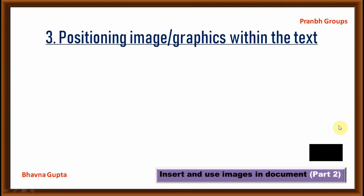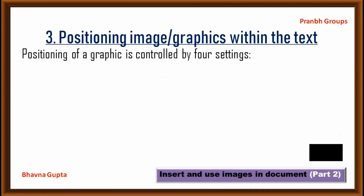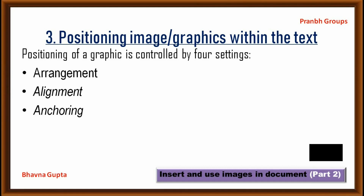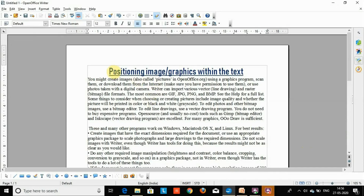Next topic: positioning images within the text. Positioning of graphics is controlled by four settings. First, Arrangement — refers to the placement of a graphic on an imaginary vertical axis. Second, Alignment — refers to the vertical or horizontal placement of the graphic in relation to an anchor point. Third, Anchoring — refers to the reference point of the graphic. Fourth, Text Wrapping — refers to the relation of a graphic to surrounding text, which may wrap around the graphic on one or both sides.